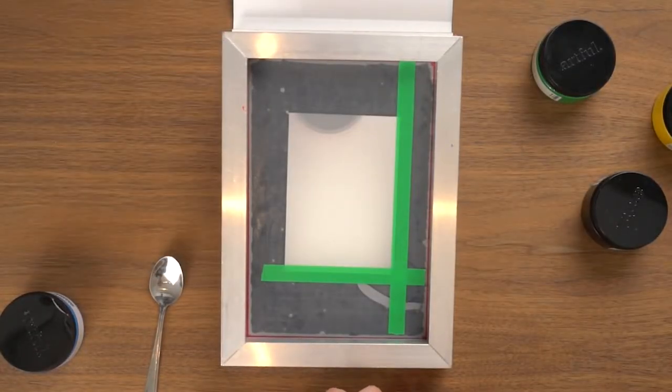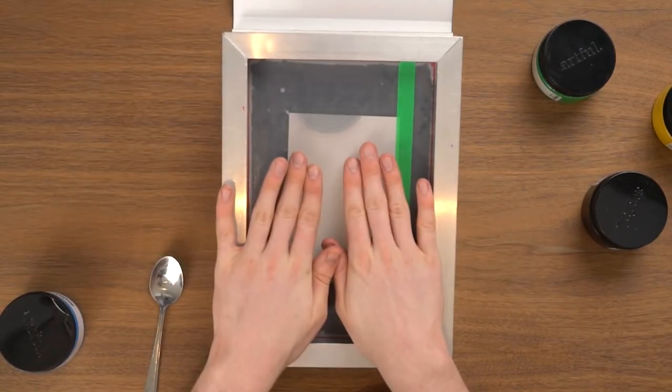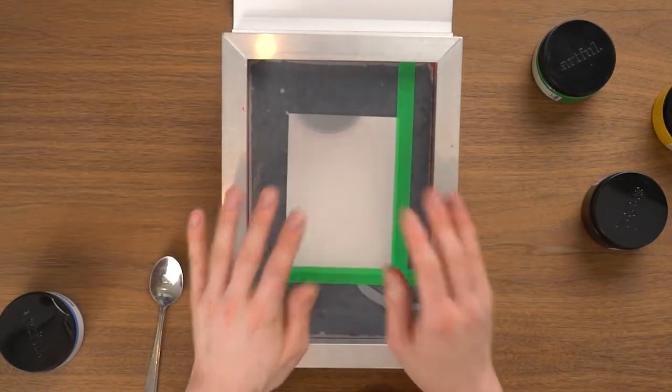You'll see that I've taped off my printing area so that it more accurately matches the shape and size of my stencils. The first layer I'm going to tackle is my yellow background layer.